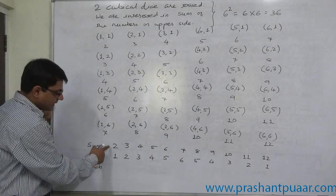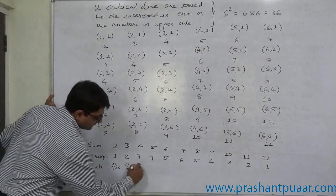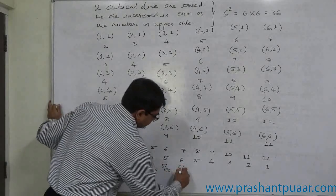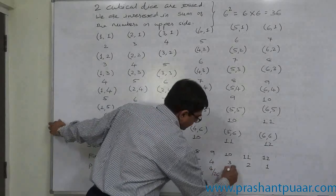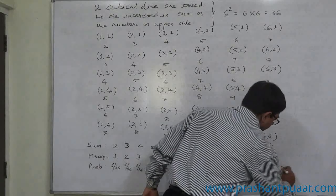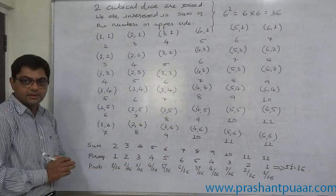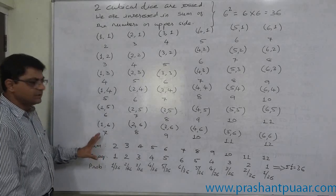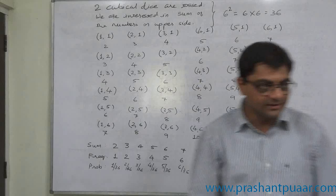So probability of getting sum 2 is 1 by 36. Similarly, 2 by 36, 3 by 36, 4 by 36, 5 by 36, 6 by 36. Again, 5 by 36, 4 by 36, 3 by 36, 2 by 36, and 1 by 36. Here, total is 36. This is actually summary. Just now, you require to learn this table only. Got it? Yes. Thank you.